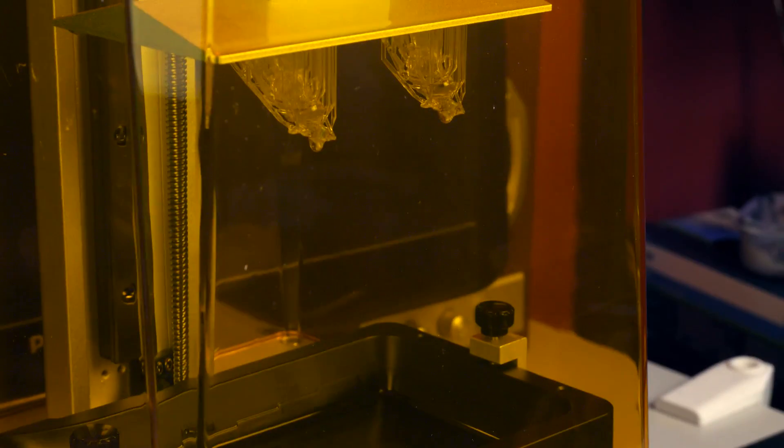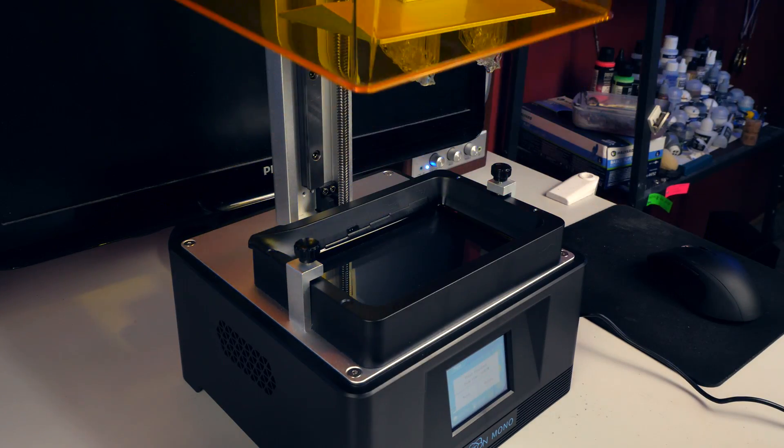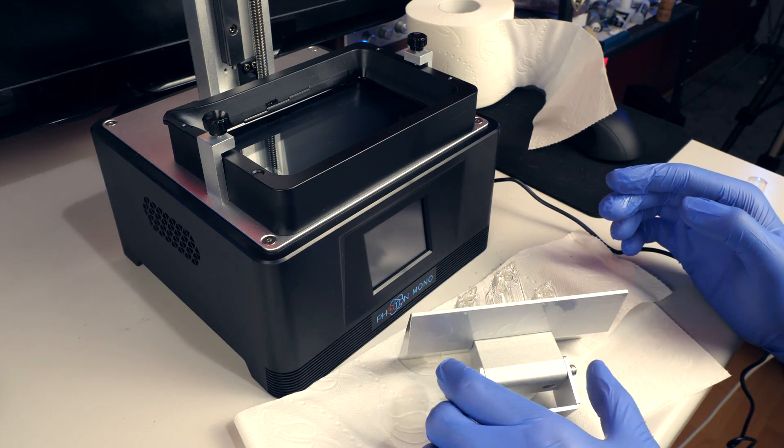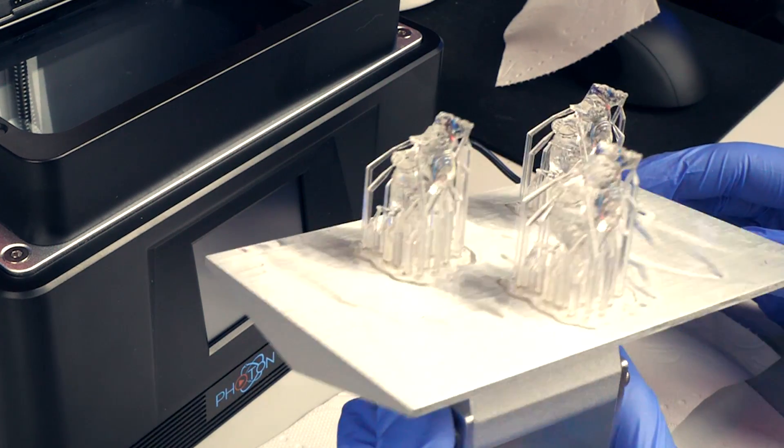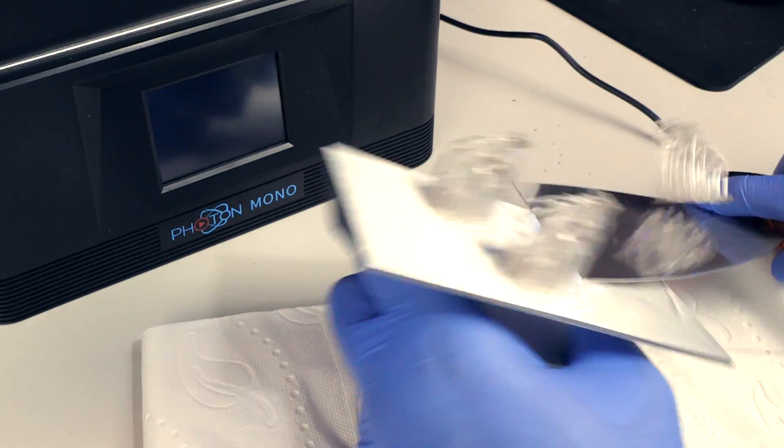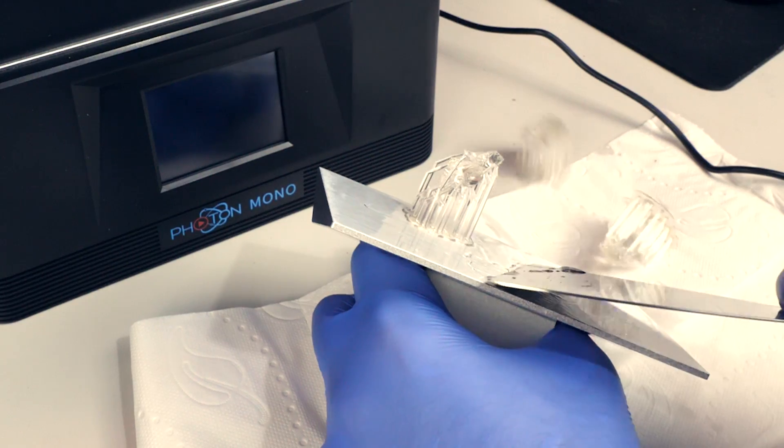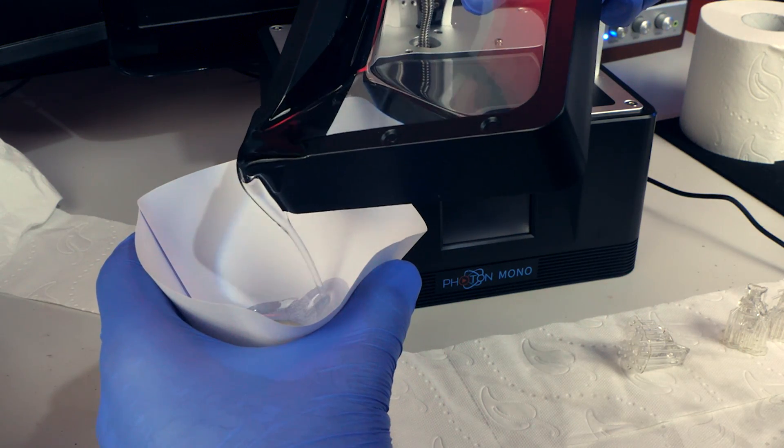The printing process itself took something under 2 hours, which is super fast. At this point I took out the printing platform and put it on some paper towels. Honestly the prints worked out great, so all I had to do is get them off using this scraper, and I put the excess resin into a sealed container for later usage. And be sure to store that in a dark place.